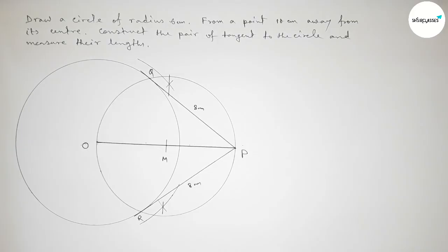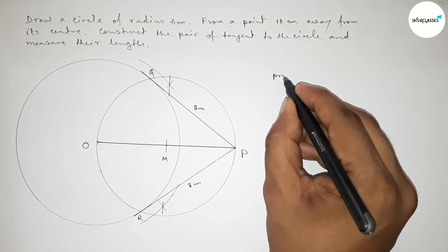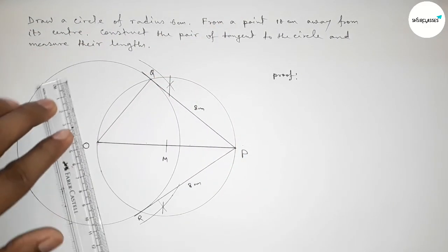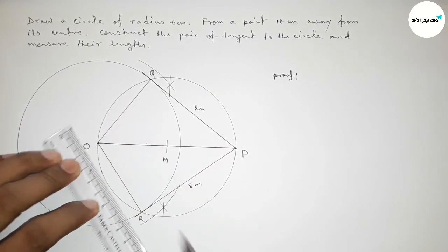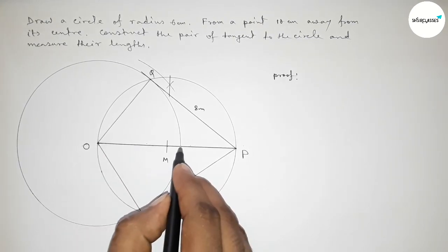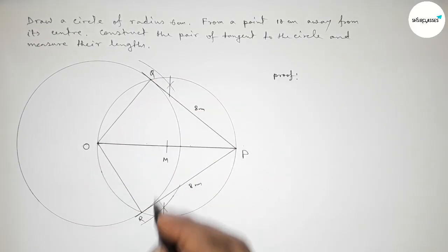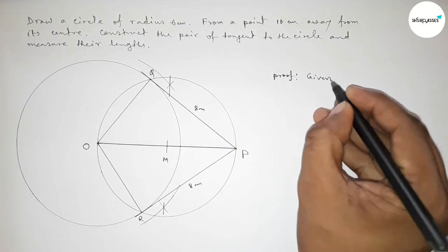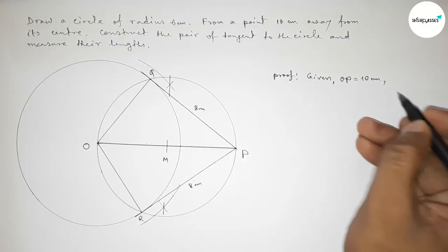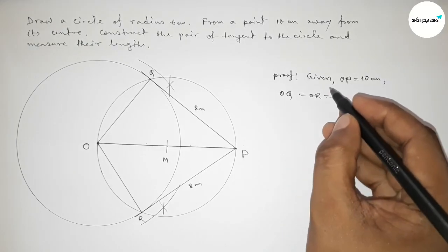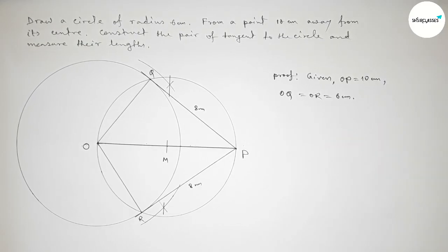Measuring the distance: PQ is approximately 8 centimeters, and PR is also approximately 8 centimeters. Now we have to prove this. Joining O to Q and O to R — these are radii of the circle, so OQ and OR are each 6 centimeters, and OP is given as 10 centimeters.